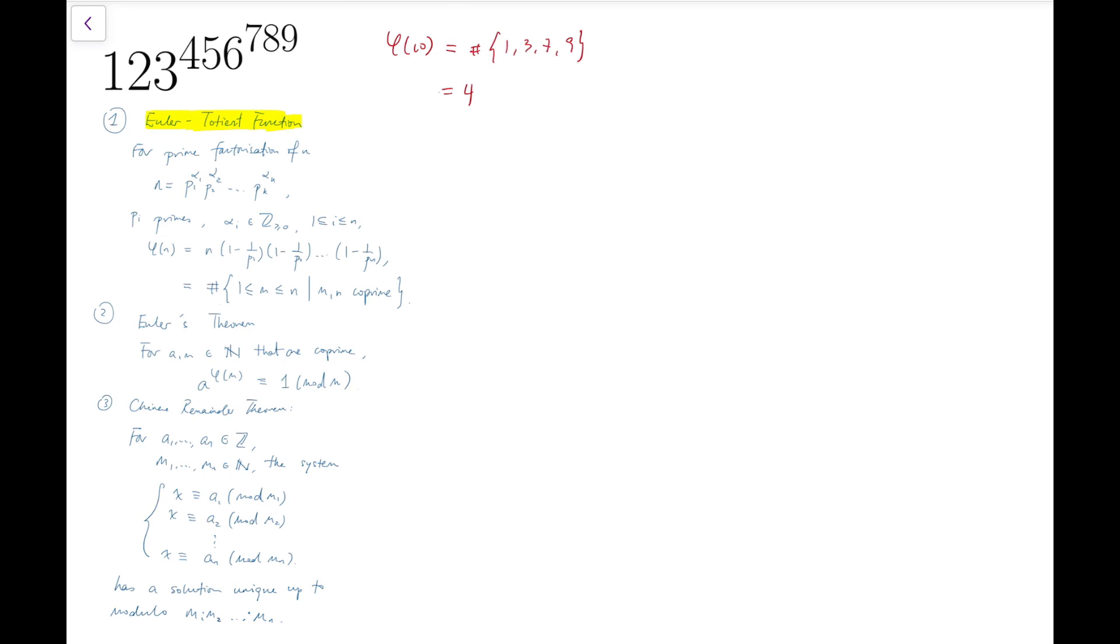We do not like to count the number of such integers all the time, so we have derived the formula, which is by multiplying n by (1 - 1/pi) for all the prime factors pi of n. So back to this example, because 10 equals 2^1 times 5^1, φ(10) also equals 10 times (1 - 1/2) times (1 - 1/5), and that's equal to 4.